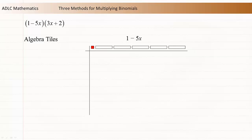To use this method, start by using one of the binomials to represent the length of a rectangle. Use the other binomial to represent the width of the rectangle. Now use the dimensions to fill in the rectangle. The first piece is 1 long and x tall. Use these dimensions to draw another tile.